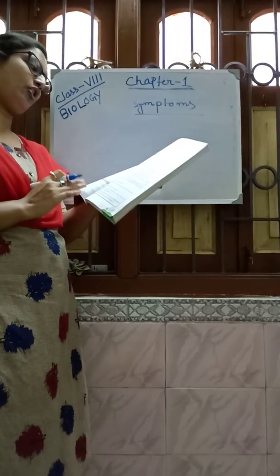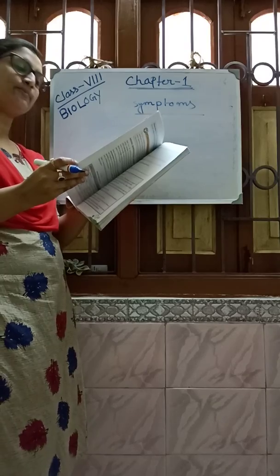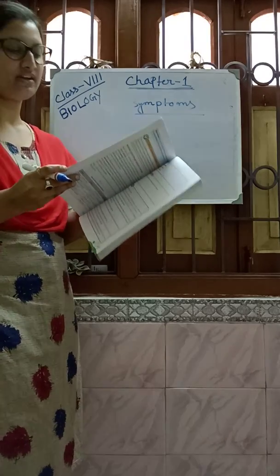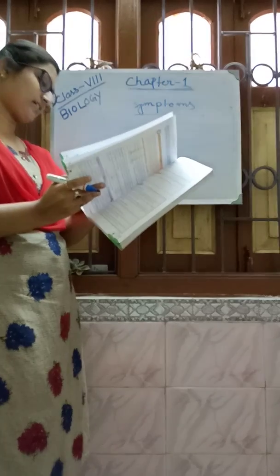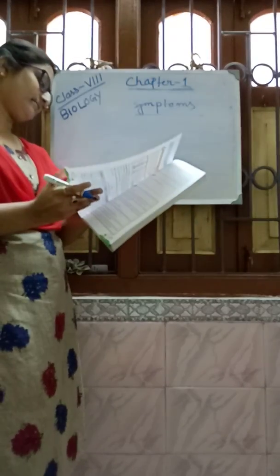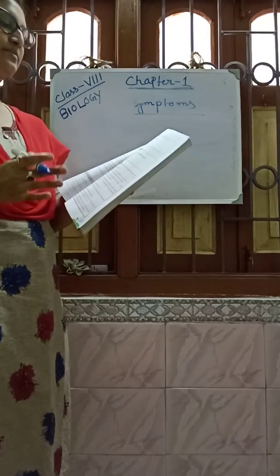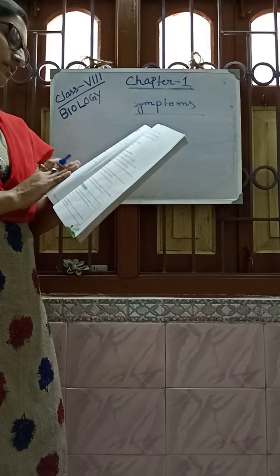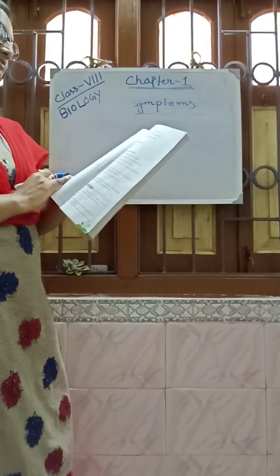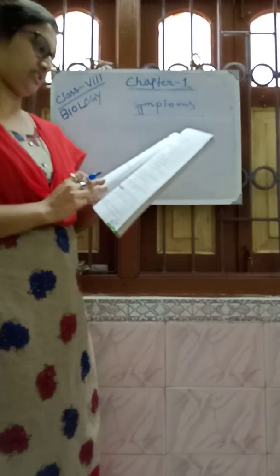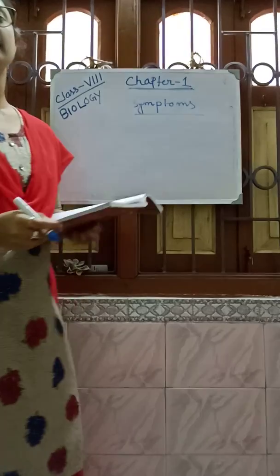Very few topics are left in your first chapter on the transport system in plants. We have completed the transport of water, structure of xylem, structure of phloem, mineral nutrition, and deficiency symptoms — learn these at home. In the next video I will discuss the question and answer exercise, and I will also give homework. Thank you.